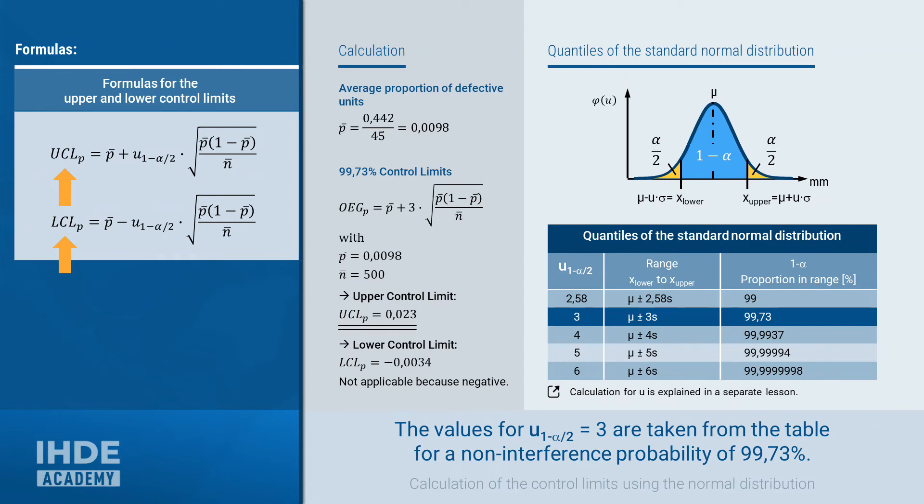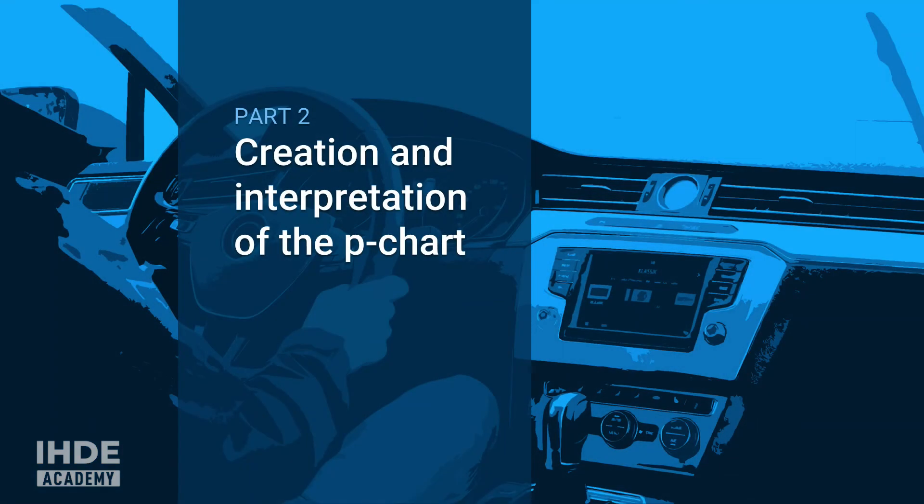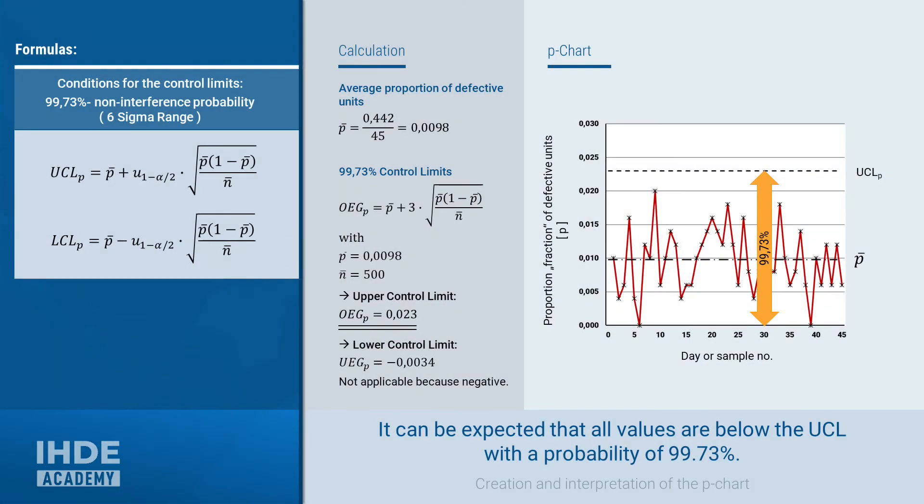So, now that we have determined the upper control limit, we now come to the creation and interpretation of the p-chart. In the control chart on the right, the proportion of defective parts in a sample was entered on the y-axis. The x-axis is for the sample number. In our example, it is days because one sample was taken per day. The average proportion of non-conforming parts, p bar, was entered into the control chart as a kind of middle line of the value distribution and is at the known 0.0098. The upper control limit was drawn at the calculated 0.023.